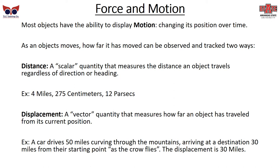Displacement is a vector quantity — vectors have both a magnitude and a direction. It tells you how far an object has traveled from its current position. For example, a car drives 50 miles curving through the mountains, arriving at a destination that is 30 miles from the starting point — as the crow flies. So the displacement is 30 miles, but the distance is 50.